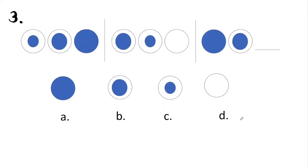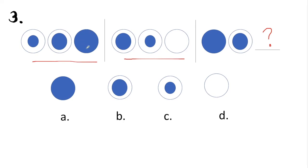Now we go to number three. We are given several circles. In the first set, you have three circles; the second set also has three circles; and the last set has only two circles — you're asked for the last circle. Looking at the relationships: in the first set, the circle in the middle is small and eventually becomes bigger. In the second set, the circle in the middle is eventually becoming smaller again, until in the last circle there is no more inner circle.